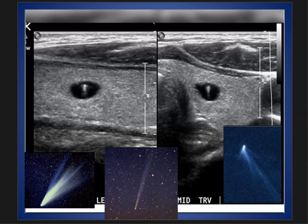What are the other causes of comet tail artifact? It can be seen in phleboliths, can be seen in round atelectasis, and can be seen in calculi. It can also be seen in adenomyomatosis of the gallbladder and other calcifications, as well as in surgical material like clips, catheters, or other foreign bodies.